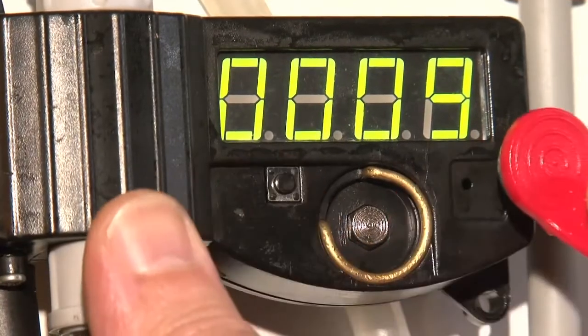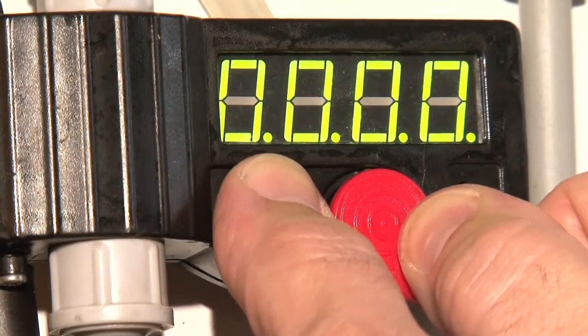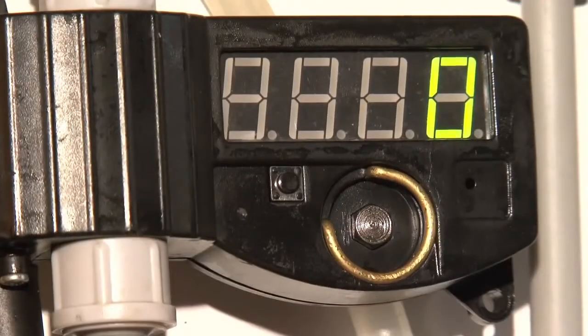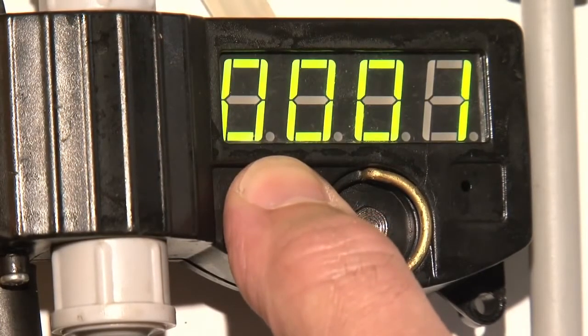If the number should run over due to holding the button down too long, the process must be repeated. To check the unit, press the small button once more and it should now read zero zero zero one.